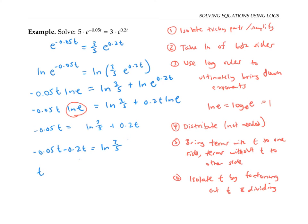And finally, I'm going to isolate t by factoring and dividing. So by factoring, I mean I factor out my t. And now I can divide. Using my calculator, I can get a decimal answer of 2.0433.